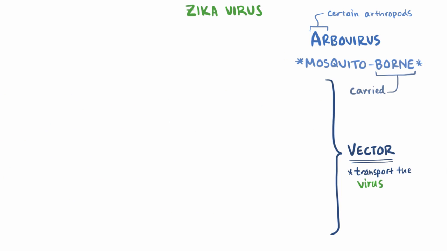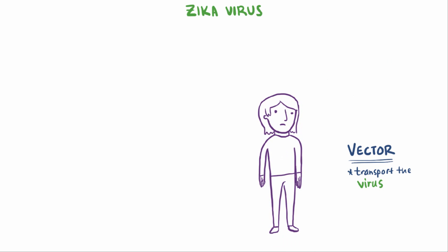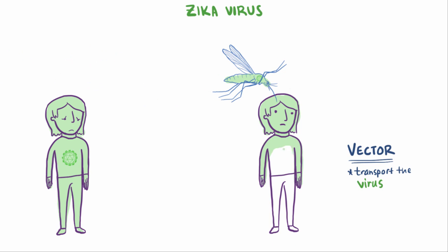So with Zika virus, just like other mosquito-borne viruses like dengue fever, yellow fever, Japanese encephalitis, and West Nile virus, the mosquito acts as a vector that transmits the virus from one person to the next. These viruses are all in the genus Flavivirus.